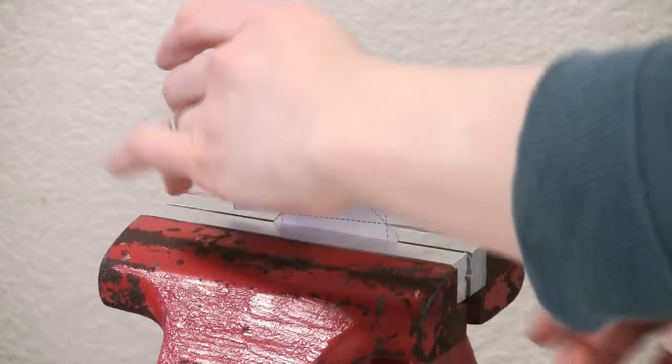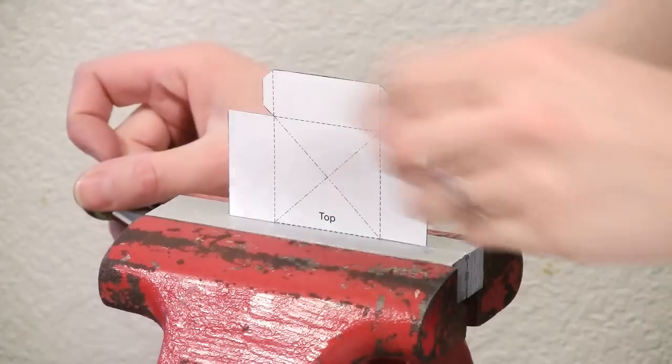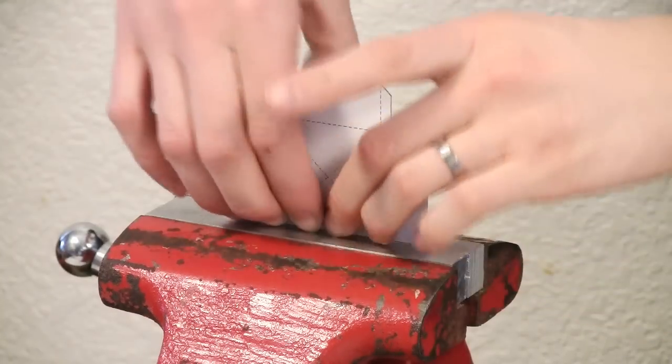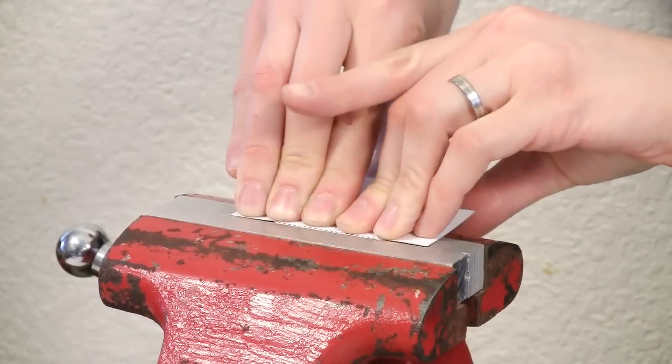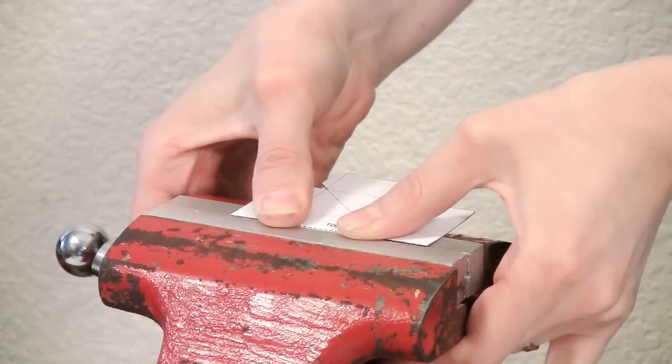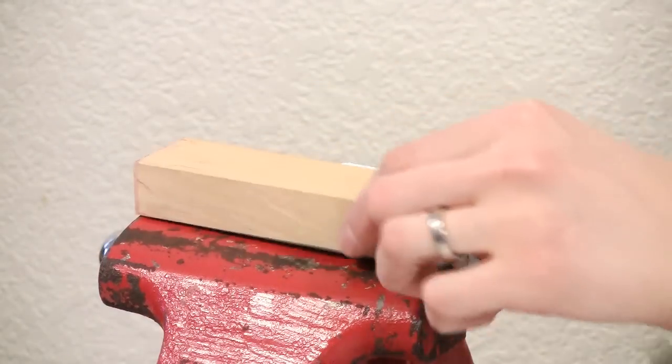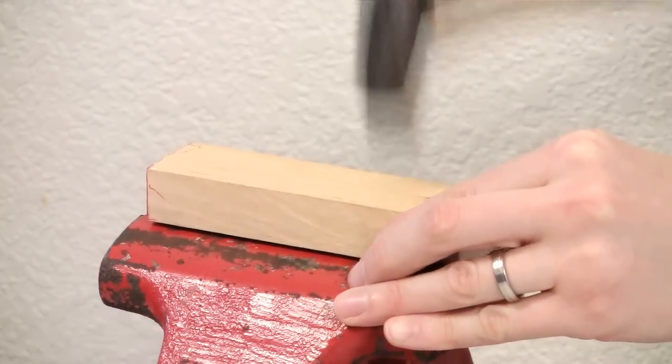To fold a piece of tin plate in the vise, simply grip it in the jaws, carefully aligning the dotted line on your pattern with the top of the jaws. Then, bend the piece over with your fingers. If you want a really sharp corner, you can tap the folded edge with a block of hardwood and a hammer.